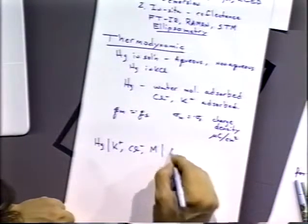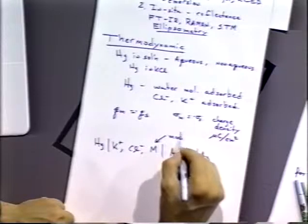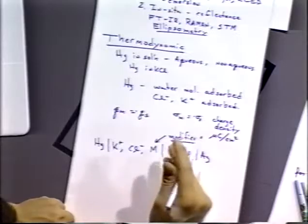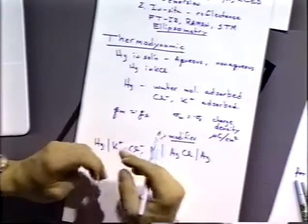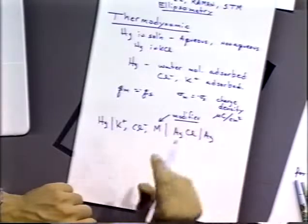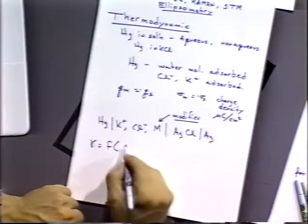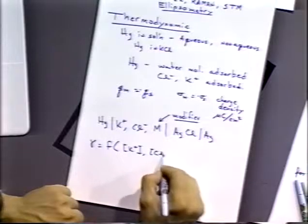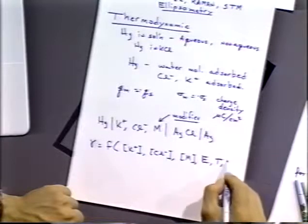Let's talk about this particular cell for the next few pages: mercury | chloride ion | species M | silver-silver chloride reference electrode. We'll call M our modifier. We can start with potassium chloride alone and then think about what happens when we add M. Our goal is to measure the change in surface tension as a function of the concentration of potassium ions, chloride ions, concentration of the modifier, electrode potential, temperature, and pressure — and actually we're talking about activities rather than concentrations, but we'll use concentrations to keep it simple.